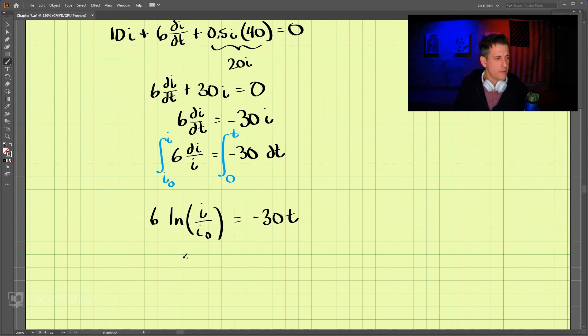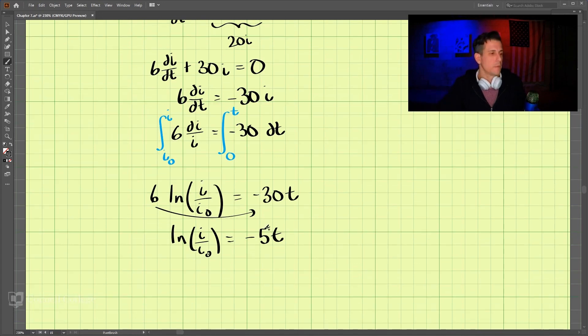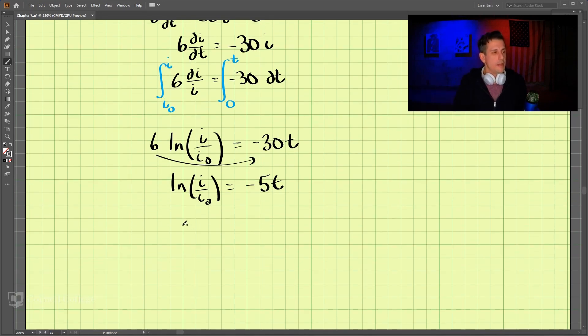I'm going to move the 6 over to the other side, so we have natural log of I over I₀ is equal to negative 5t. So I just move this over to the other side. And we'll take both sides to the e, and here we get I over I₀ is equal to e to the negative 5t, and that we can rearrange as I is equal to I₀ times e to the negative 5t.